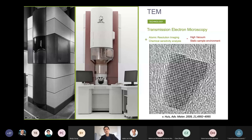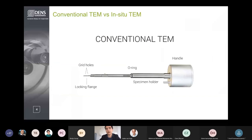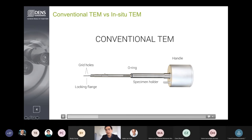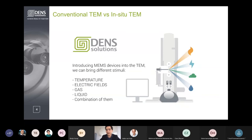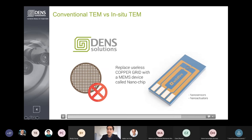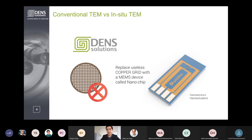That's what we refer to as in-situ TEM. What we do to enable in-situ TEM is: if you look at the conventional holder, at the tip of the holder that's where you place the sample via a conventional three-millimeter screen. What we do is replace this three-millimeter screen — because that's a static, boring sample carrier — and use a MEMS device instead, a micro-electromechanical system. This MEMS device is a chip equipped with all sorts of nanosensors or nano-actuators that will allow you to start manipulating the molecular structure of your sample as a function of different stimuli. Therefore, these MEMS will be acting as a nanoscale laboratory inside your TEM.